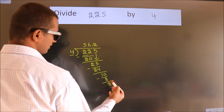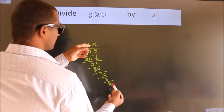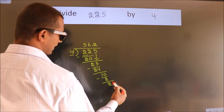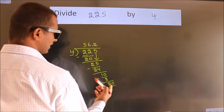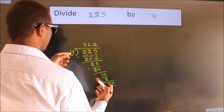After this, we already have the decimal, so directly take 0. So 20. When do we get 20 in the 4 table? 4 times 5 equals 20.